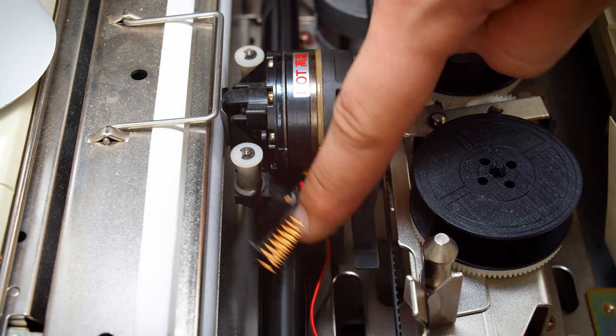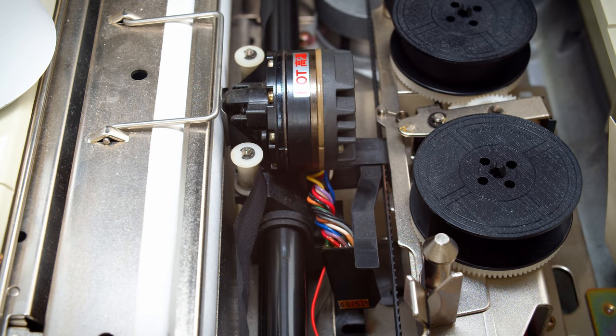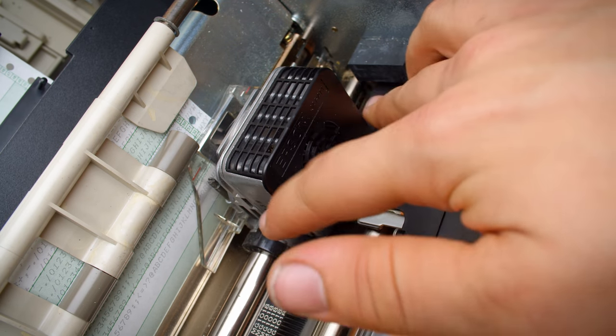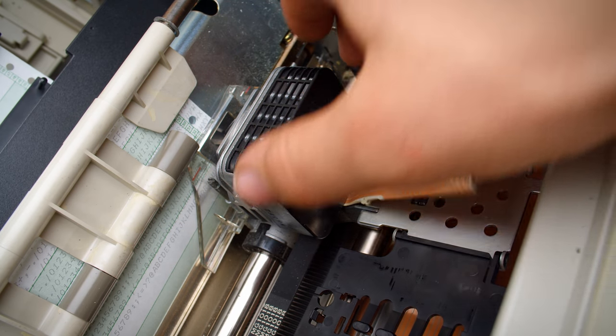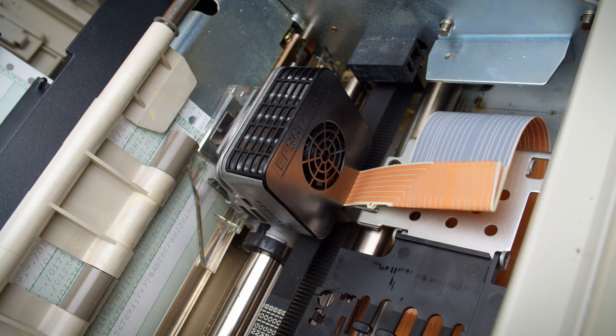I also have a Microline 92 where the head doesn't look too bad to remove, and an Epson DFX 5000 where the head has a ribbon cable permanently attached to it, but it looks like it's only two screws away from coming out.